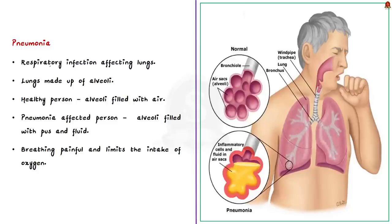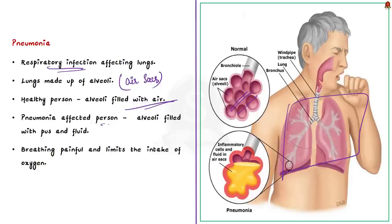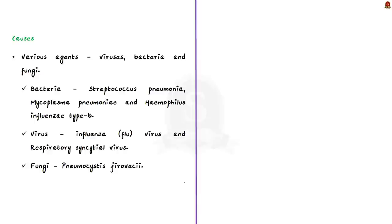Pneumonia is a form of respiratory infection that affects the lungs. The lungs are made up of small air sacs called alveoli. When a healthy person breathes, the alveoli are filled with air. But when an individual has pneumonia, the alveoli are filled with pus and fluid, which makes breathing painful and limits the intake of oxygen. Pneumonia is caused by various infectious agents including viruses, bacteria, and fungi. The most common bacteria are Streptococcus pneumoniae, Mycoplasma pneumoniae, and Haemophilus influenzae type B.